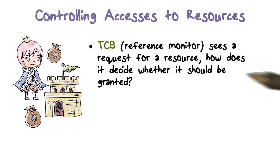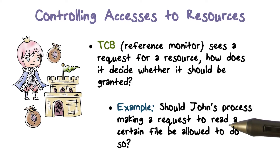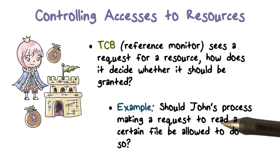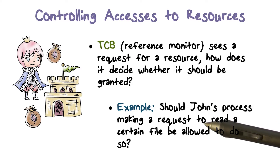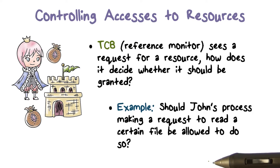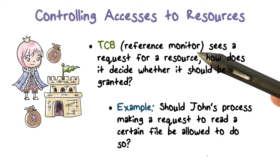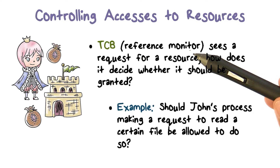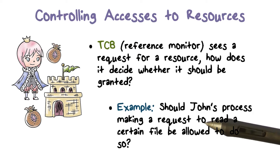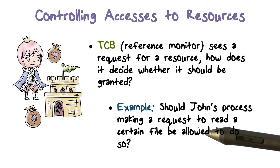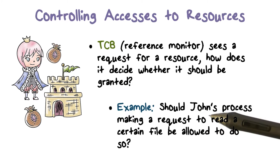How do we decide if a request should be granted? As a quick example, let's say John is a student in a class, and there's a file that has the grades of all the students enrolled in that class. John can make a request to read that file — not only does he want to see his own grade, maybe he's curious about how other people did on a test or exam. In this case, our access control should decide that John should not be able to see other people's grades, so the result may be denying the request.